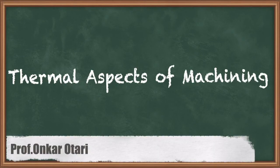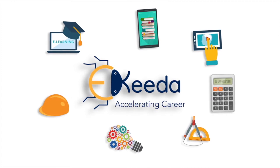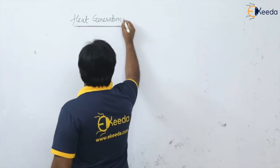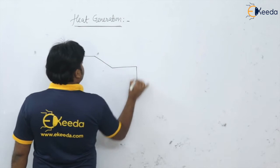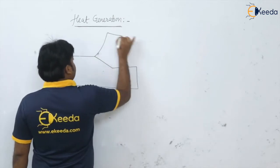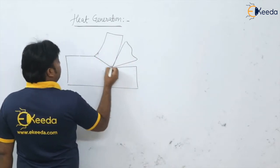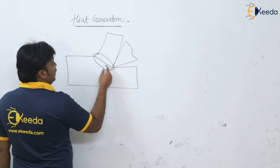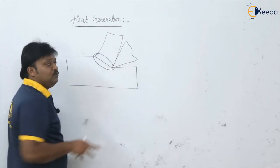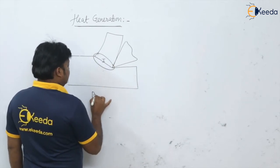Welcome students. In this video we are going to see the heat generation in the metal cutting zone. If you look at the metal cutting zone, we are getting three zones here for heat generation. The first is the primary shear zone, which is the basic or main shear zone where the material bonds are going to break and a lot of energy is going to dissipate.